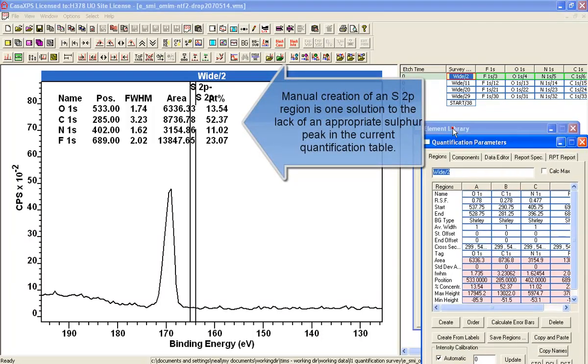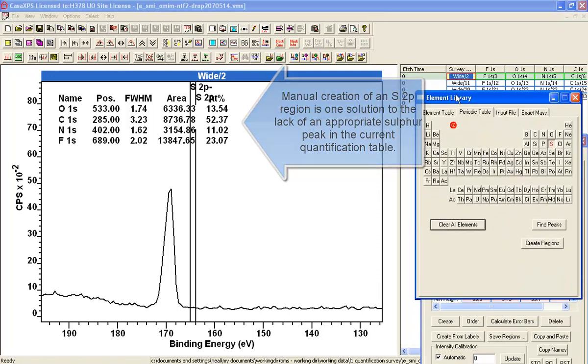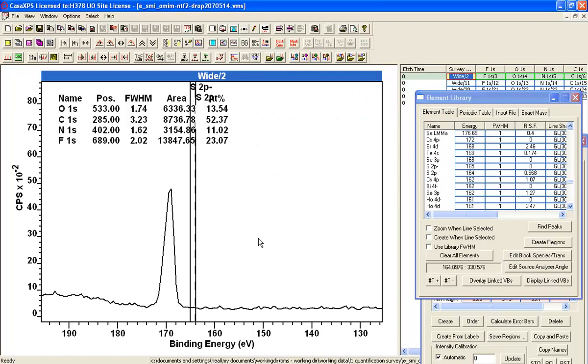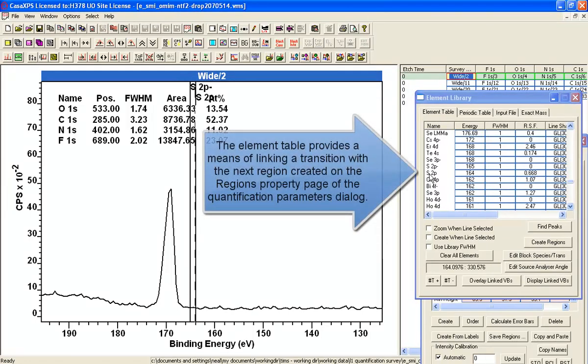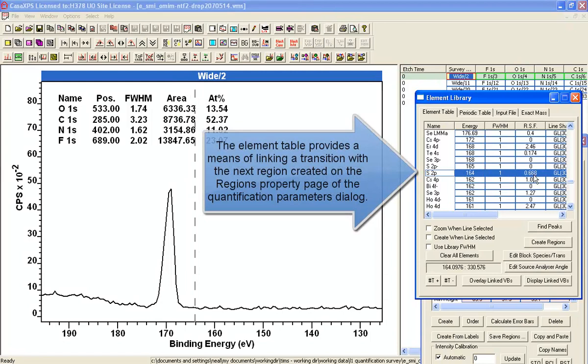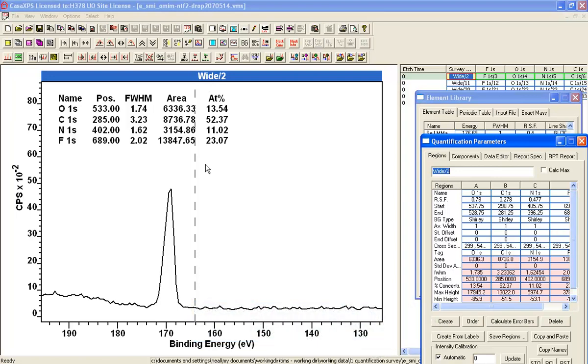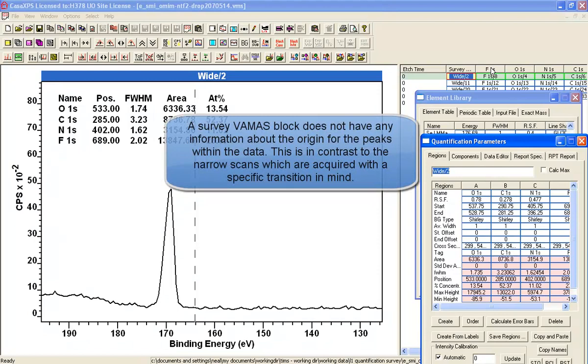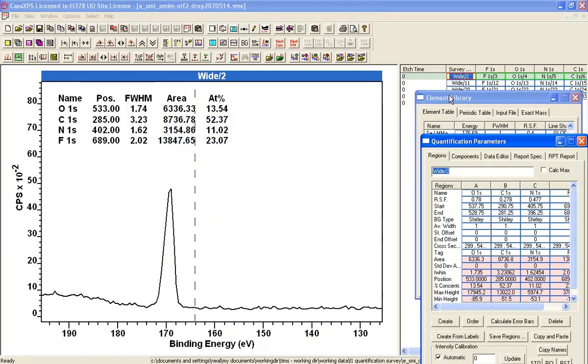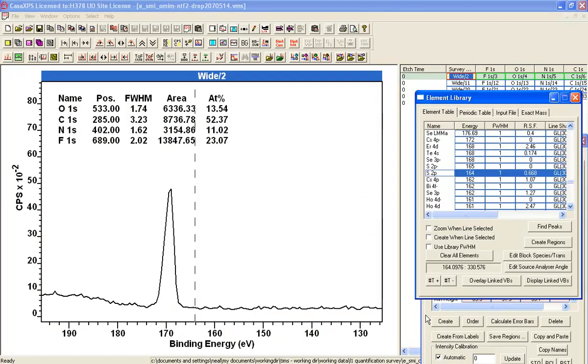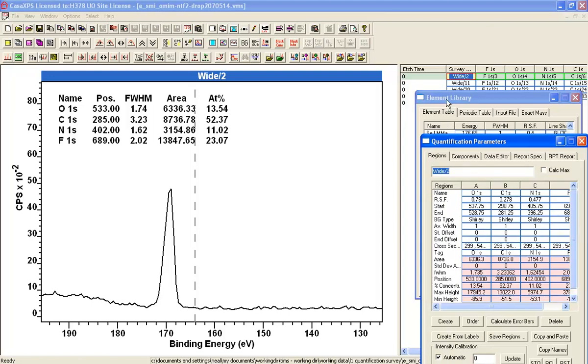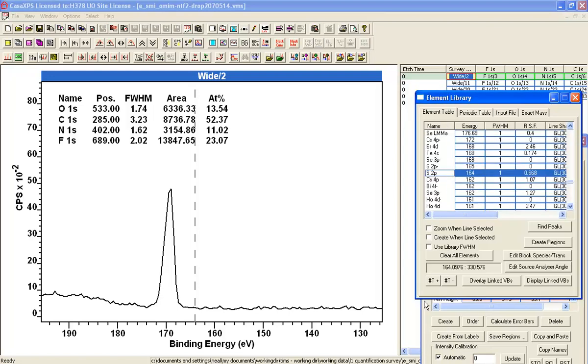And we can do this by manually entering using the element table an entry for the Sulphur. So if I select in the element library, you can see the relative sensitivity factor here. The reason that I have to select it is because the survey spectrum is in a VAMAS block that knows nothing about the actual elements that the data represents. Unlike some of these narrow scans, this is supposed to be fluorine. This survey doesn't have the same context information. So in order to create a region here, I have to indicate the element. And I have done with this Sulphur 2P. And then I can say create, having indicated on the element table, create.